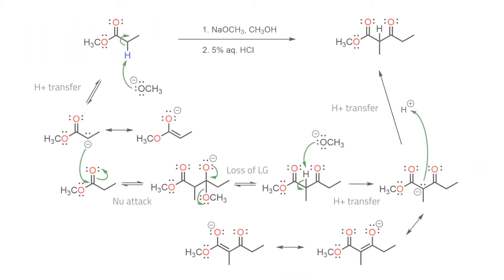The mechanism involves an initial deprotonation alpha to the ester carbonyl, which provides a low concentration of the corresponding enolate conjugate base. This attacks the remaining ester and effects nucleophilic acyl substitution to give a beta-keto ester.